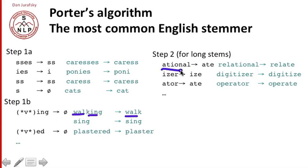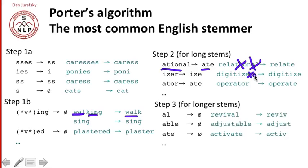There are lots of other such rules. For example, 'ational' turns into 'ate,' so 'relational' loses the 'ational' part and ends up as 'relate.' And 'iser' maps to 'ize,' so we cross off the 'r.' The rules get even more complicated: for very long stems, you remove 'al' from 'revival,' and 'able,' and so on.